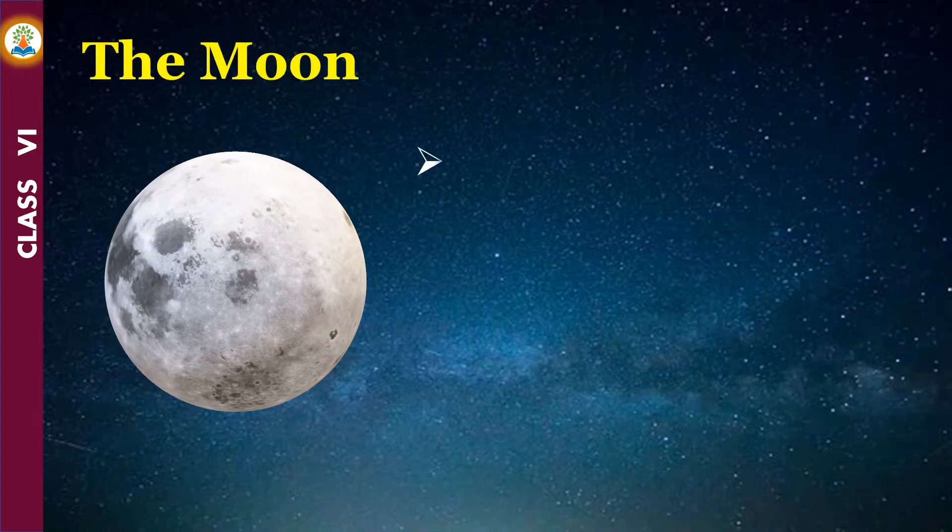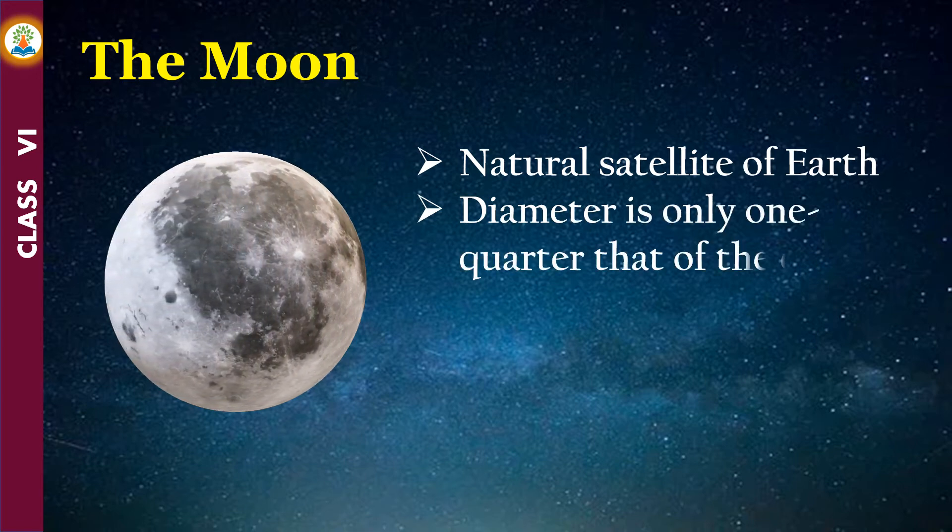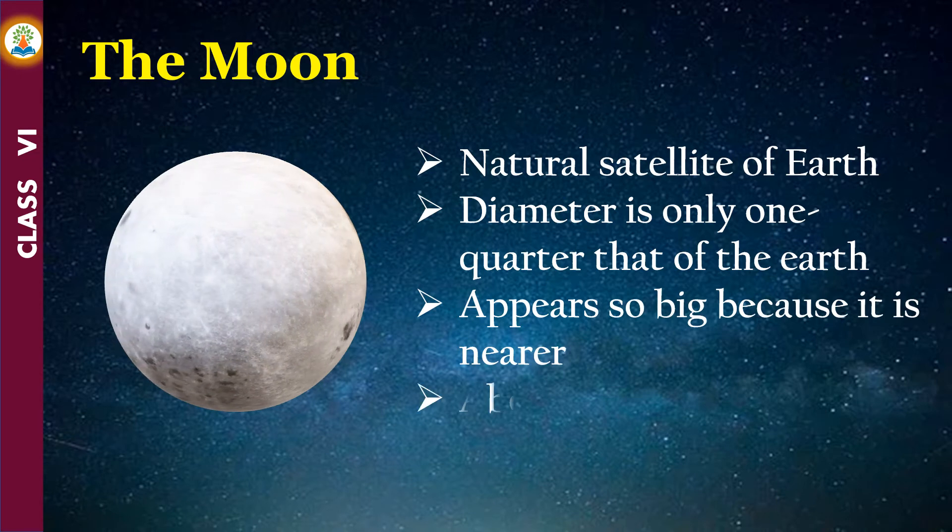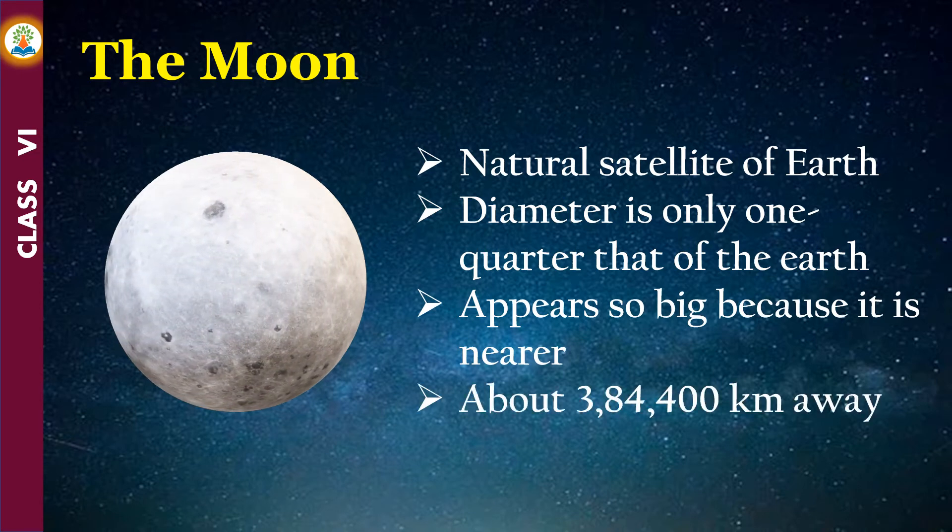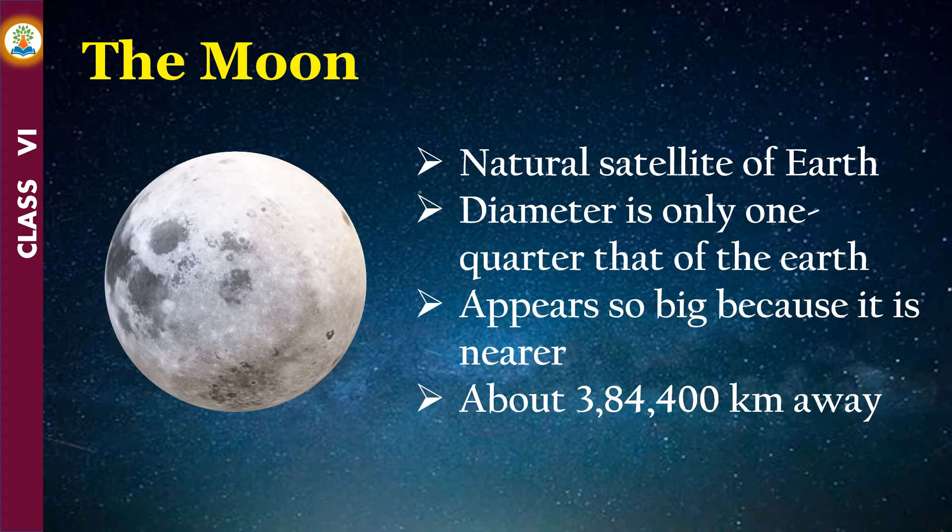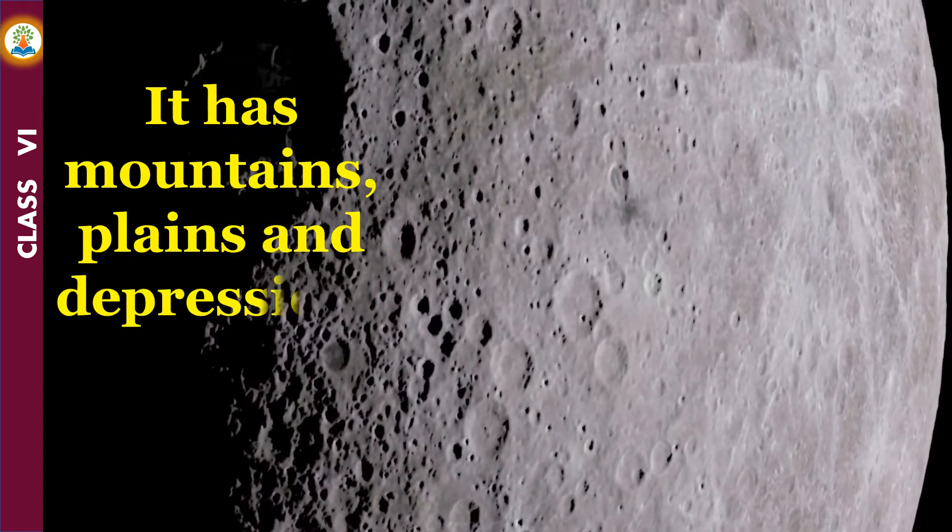The moon is the natural satellite of Earth. Its diameter is only one-quarter that of the Earth. It appears so big because it is nearer to our planet than other celestial bodies. It is about 384,400 kilometers away from us. It has mountains, plains, and depressions on its surface.